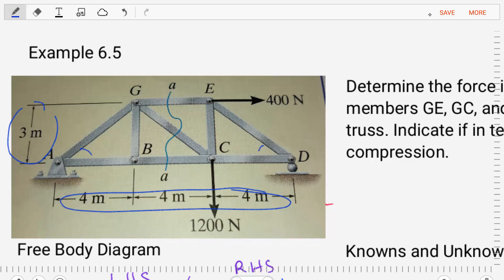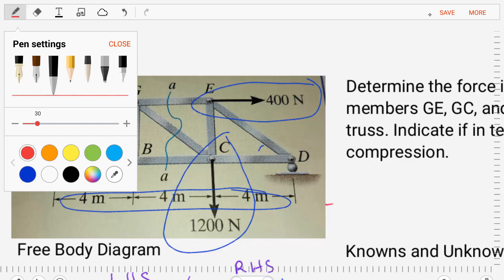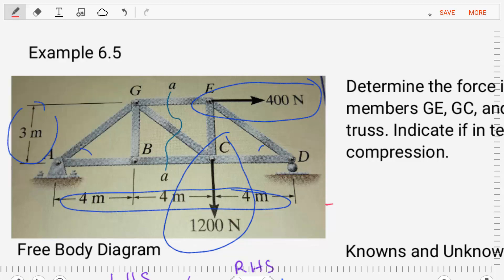We also are given two external loadings on the truss, one at point E and one at point C. And then some other information that we know is that we're going to have a pin support at A and a roller support at D.